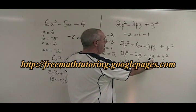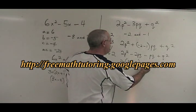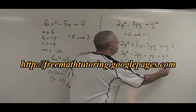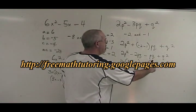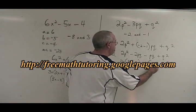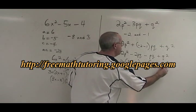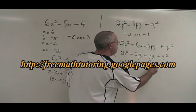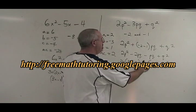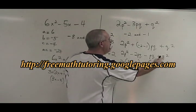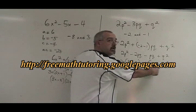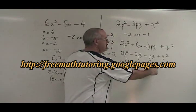The greatest common factor of these two is q or negative q. We're going to take out a negative q, because that forces the contents of the bracket to be positive. Negative pq divided by negative q is positive p, q squared divided by negative q is negative q. We have p minus q inside both brackets.